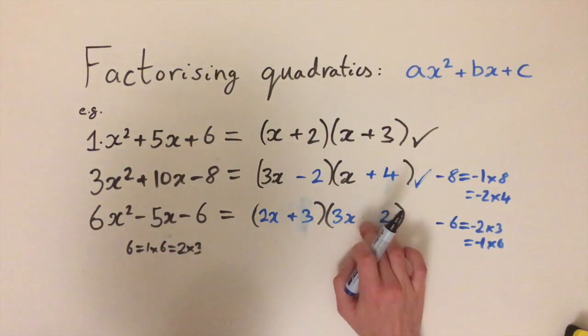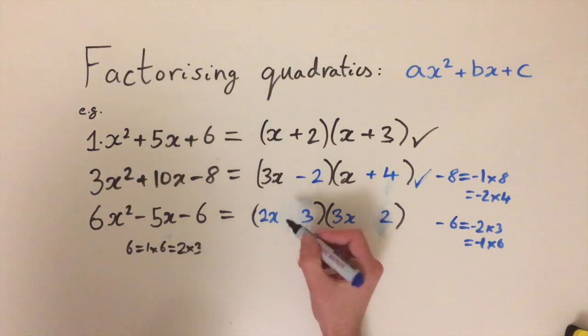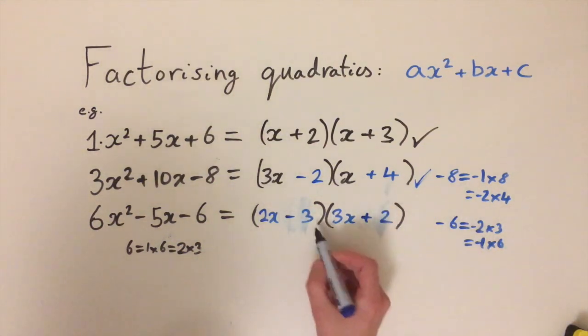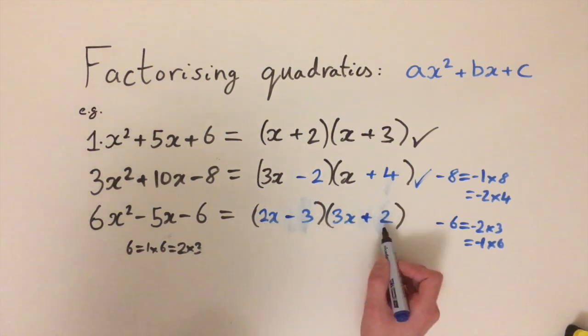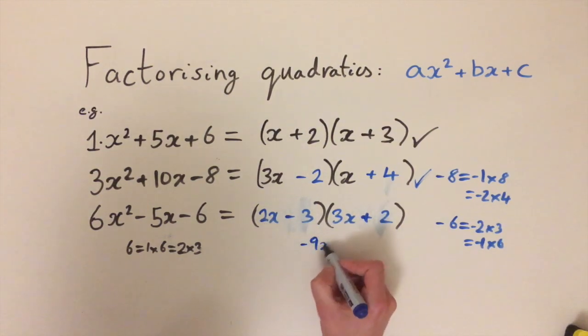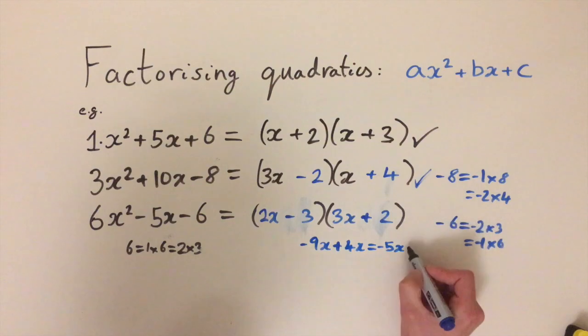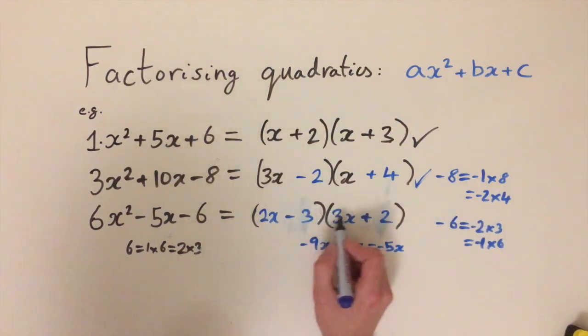So what if we change the signs here? If we instead write minus 3 and plus 2, this time we're going to get minus 9x plus 4x. So just double check minus 9x plus 4x does equal minus 5x. So this is the factorized form of this quadratic. And there you go.